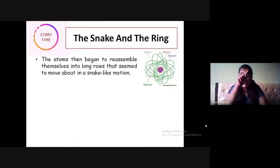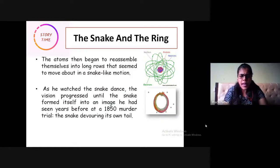And that has some particular motion. As he watched closely, he saw a snake dancing. The vision progressed until the snake formed itself into an image that he had seen before at about an 1850 murder trial.